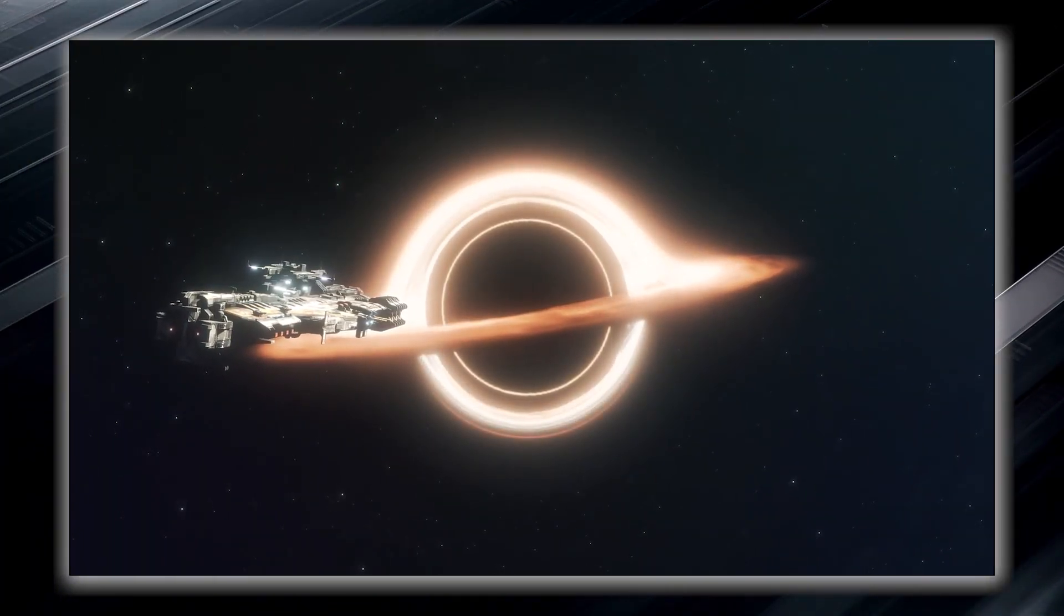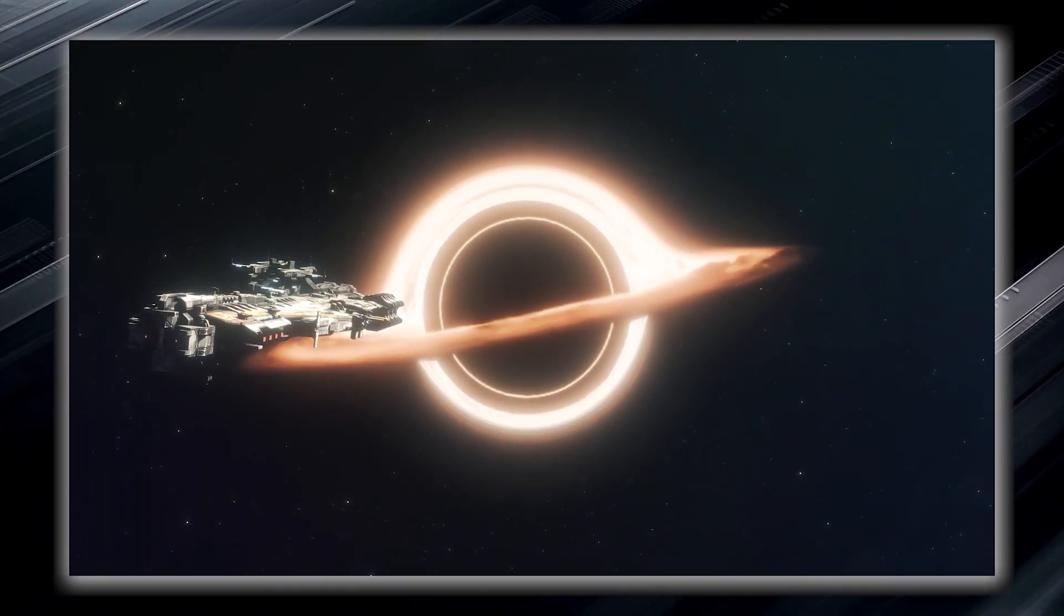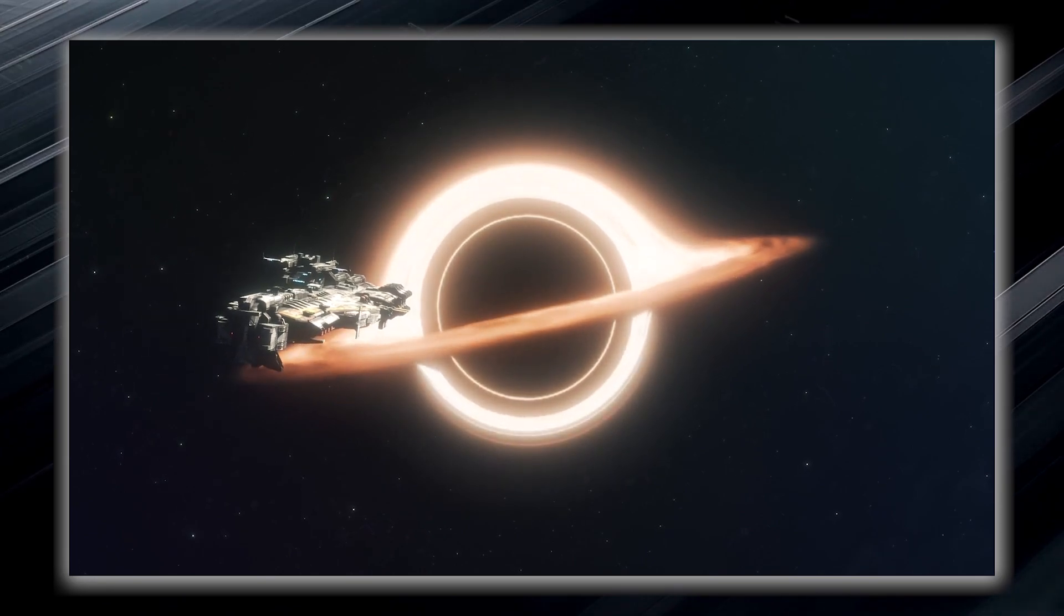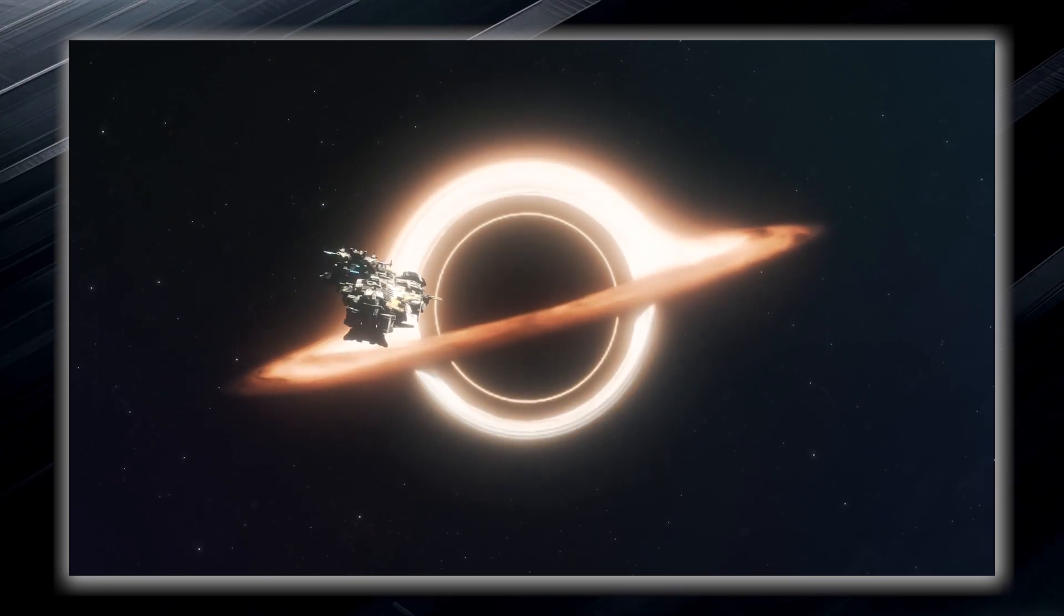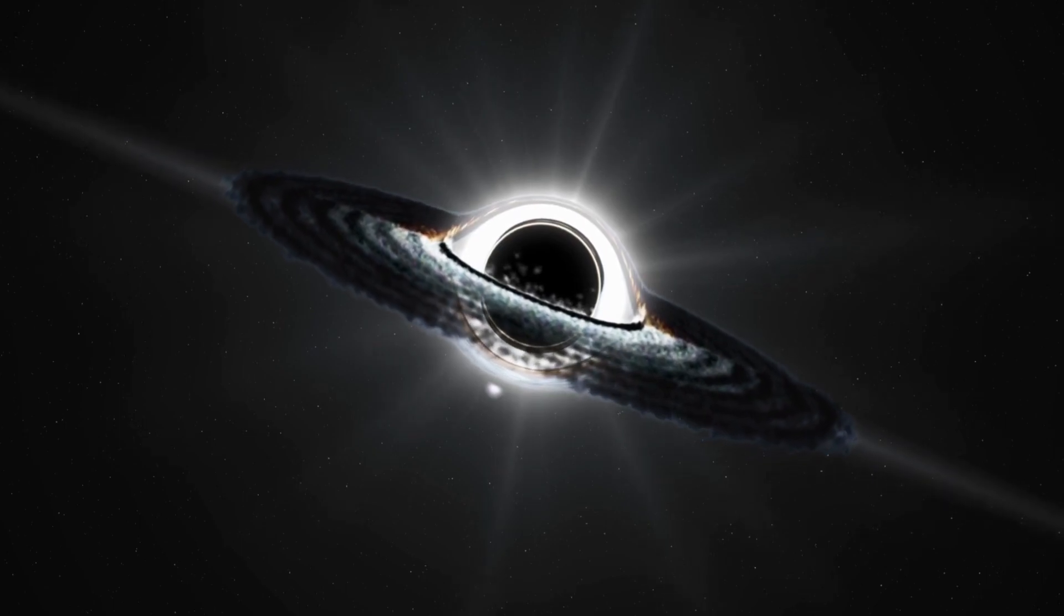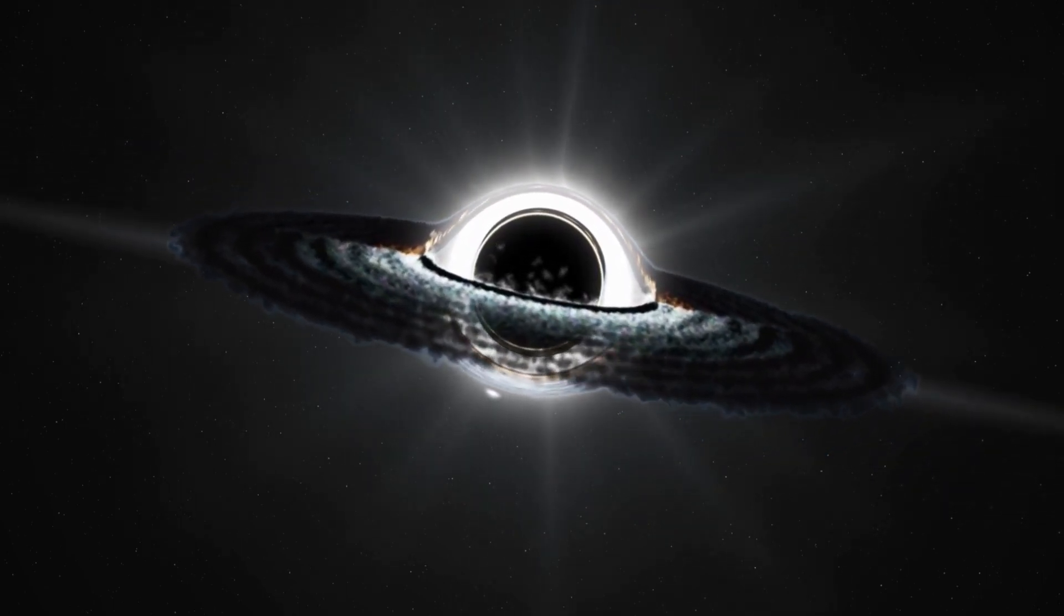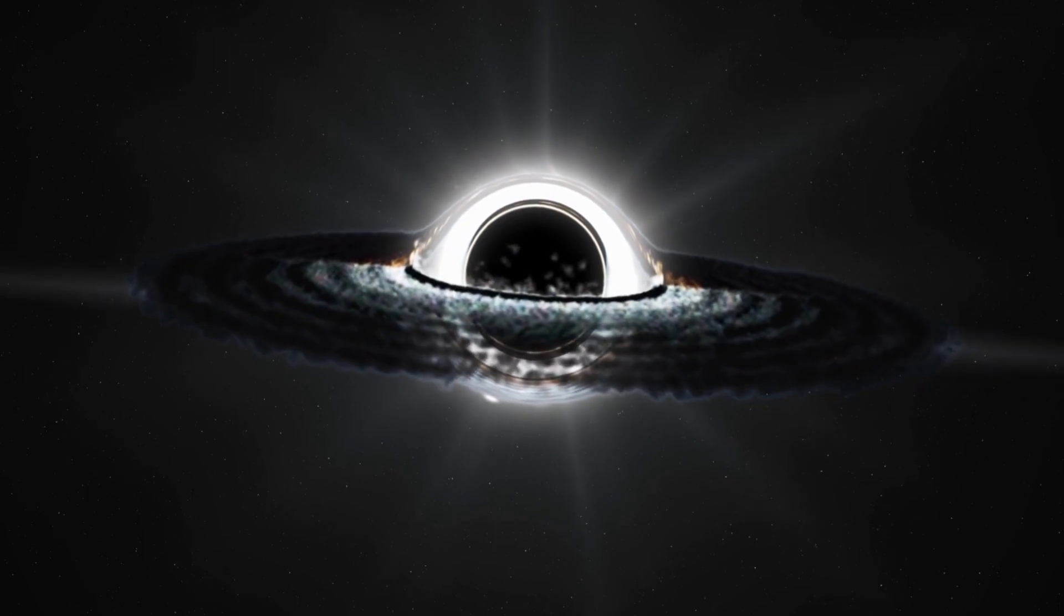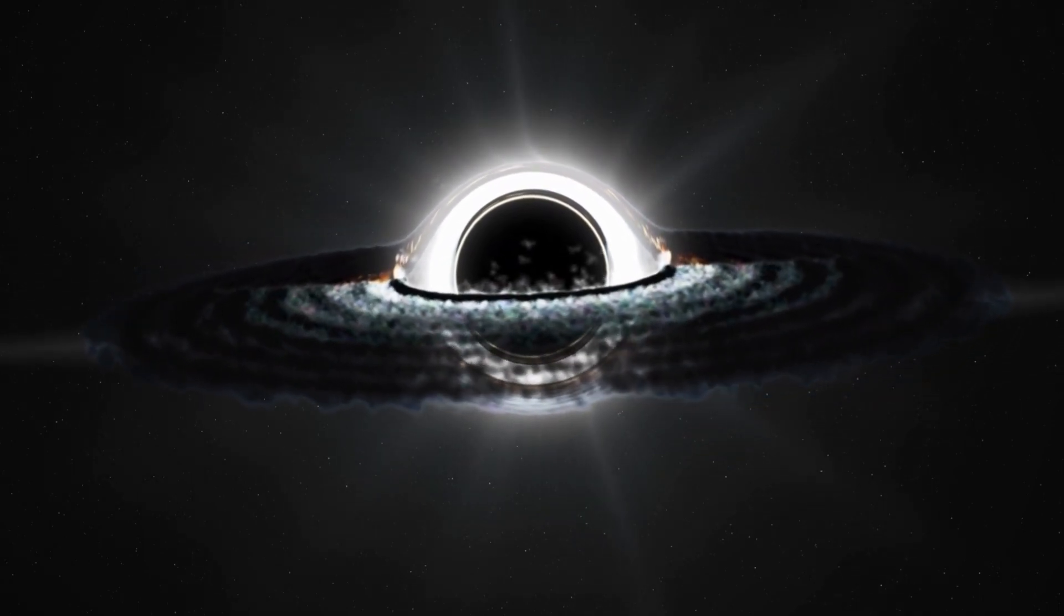Once something, such as an unfortunate spacecraft or even light, crosses its boundary, it can never escape the clutches of the black hole. The event horizon forms an invisible force field that holds everything within it, including light, which is normally considered the fastest entity in the universe.